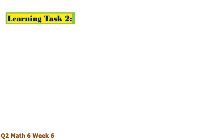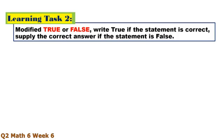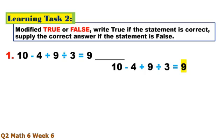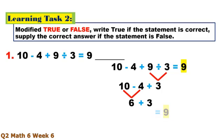Learning Task 2 — Modify True or False. Write true if the statement is correct; supply the correct answer if the statement is false. Number 1: divide first — 9 divided by 3 equals 3. Then 10 minus 4 equals 6, plus 3 equals 9. This is true.